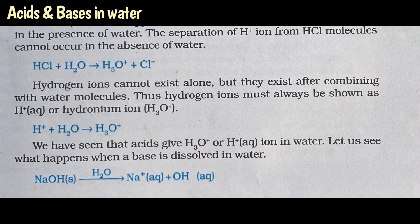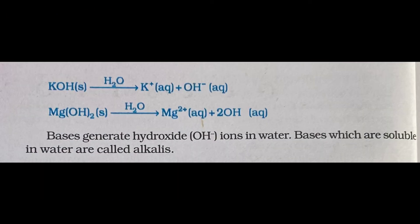Now let us see what happens when a base is dissolved in water. When sodium hydroxide is dissolved in water, Na+ ion and OH- (hydroxide) ion are formed. When potassium hydroxide reacts with water, K+ ion and OH- ion are formed. Similarly, magnesium hydroxide reacting with water produces Mg2+ ion and 2 OH- ions. From all these examples it is clear that when bases react with water, they generate hydroxide ion (OH-).